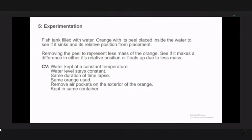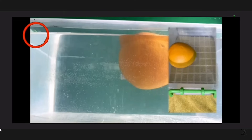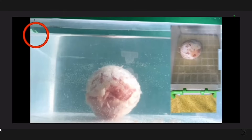Your control variables: number one, water kept at a constant temperature - you didn't measure the temperature Flatsoid, so that's an assumption. Number two, water level stays constant. If we look at this green thing over here, you can see the water level before the orange is added. Now half of the green thing is missing after the orange has been added - so your water level didn't stay constant, did it Flatsoid?